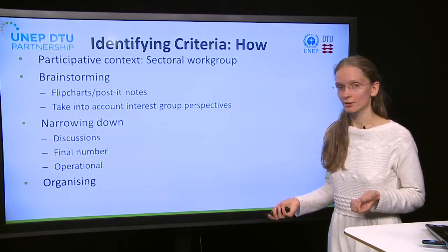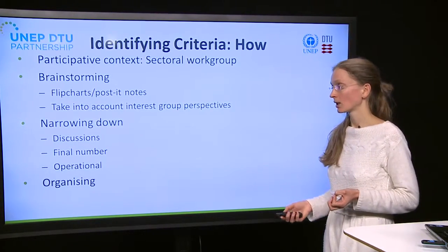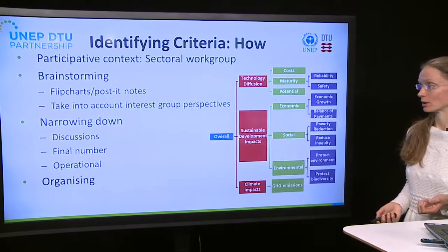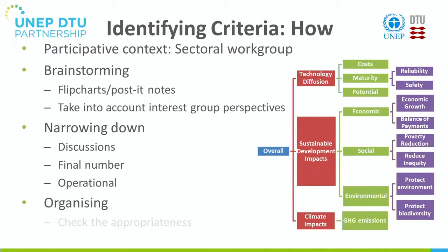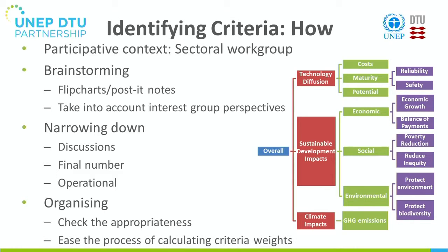Finally, especially if there are more criteria, it is a good idea to organize them in a criteria tree. This can help by checking the appropriateness of criteria selected — it is easier to trace whether all the objectives decided at the beginning of the process are covered by the criteria, and that there are no duplications. It might also ease the process of calculating criteria weights in one of the next steps.